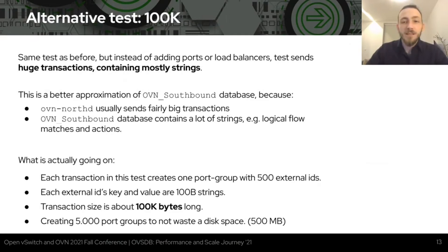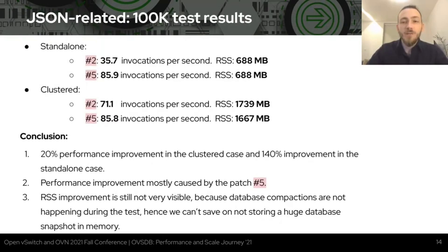This is called the 100k test. Everything is the same as with the ports and load balancers, but instead of adding ports and load balancers, we send 100KB long transactions containing mostly strings. Transactions create a port group with 500 external IDs, where each external ID key and value are 100-byte long strings. We create 5,000 such port groups. Running the test against versions 2 and 5, we see about 20% performance improvement in a clustered case and 140% performance improvement in a standalone case. RSS improvements are not very visible yet since we are not experiencing database compactions during the test.